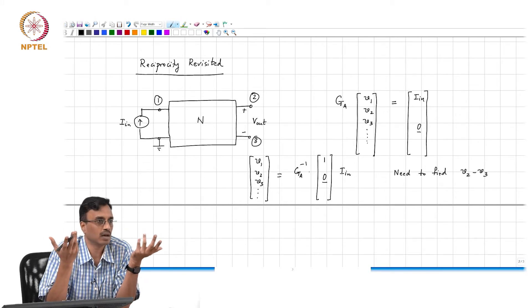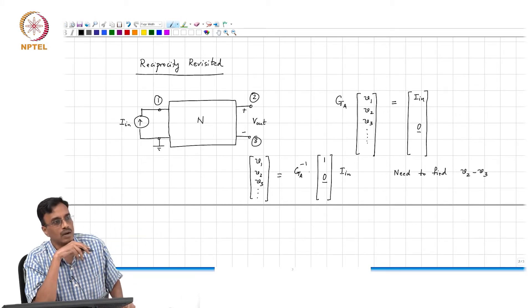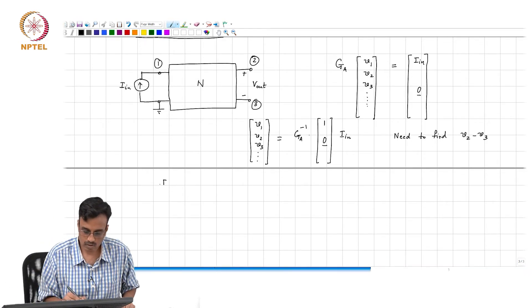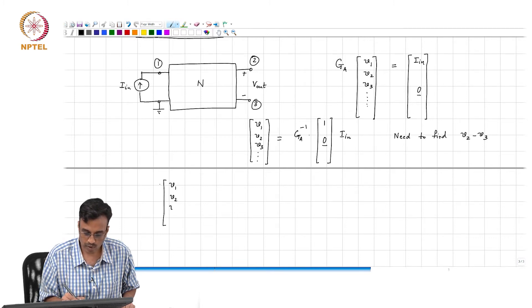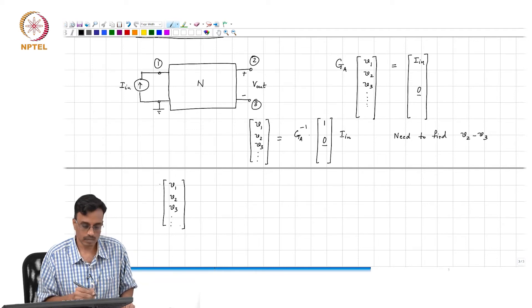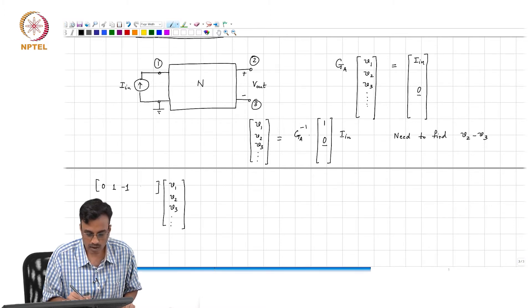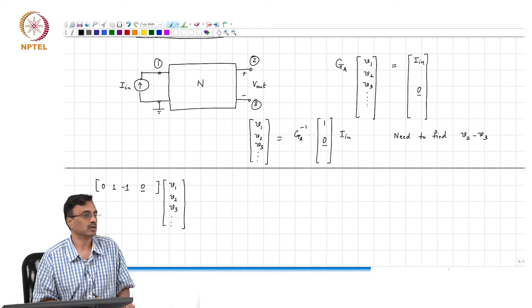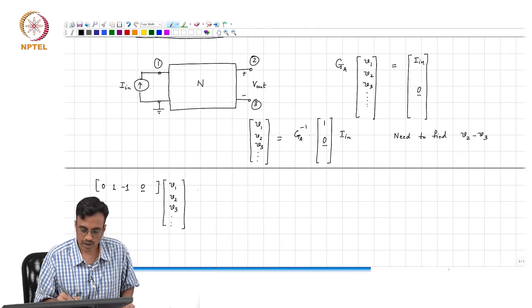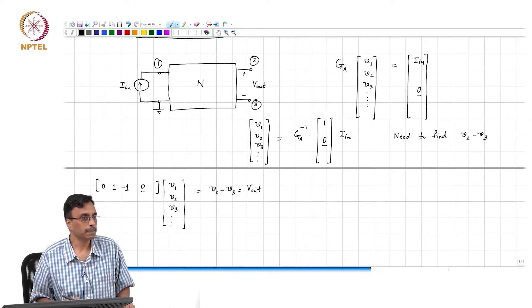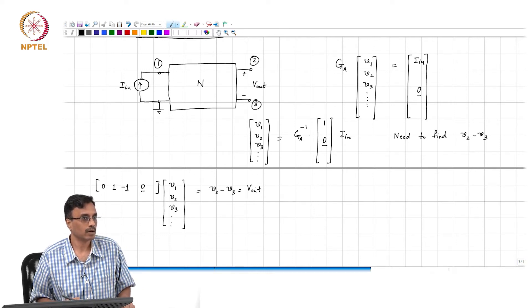How will I find V2 minus V3? We have this column vector V1, V2, V3 and so on. We want V2 minus V3. You multiply by a row vector. So V1, V2, V3, blah blah blah, times 0, 1, minus 1, and followed by all 0s must be V2 minus V3, which is V_out. Does it make sense?